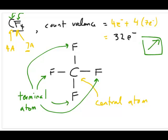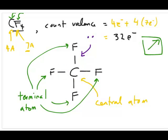Now let's think about electrons. Once you have the skeletal structure, you need to figure out how many electrons are left. Each bond represents a pair of electrons, so you've used eight electrons so far across the four single bonds. Initially you have 32, so subtracting eight leaves 24 electrons to distribute over the structure.